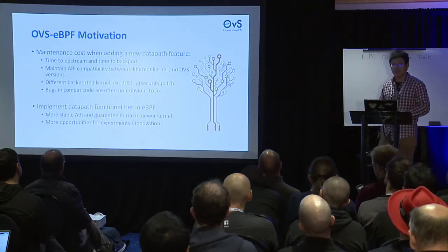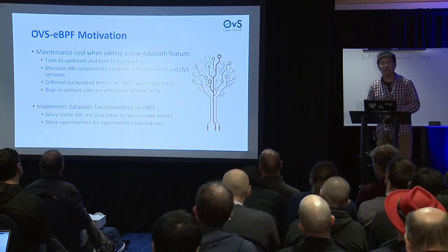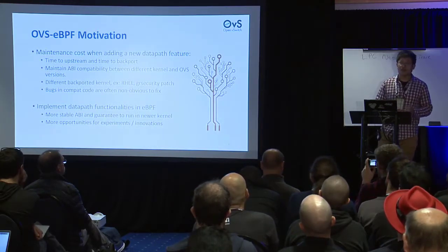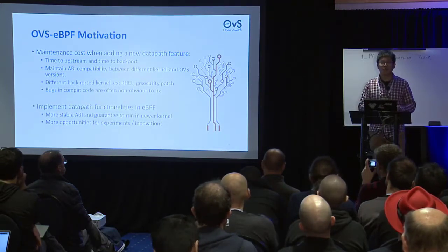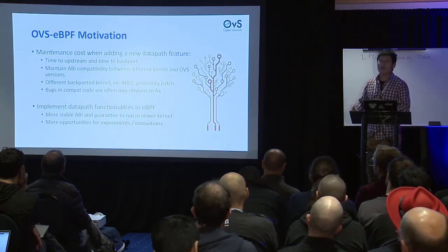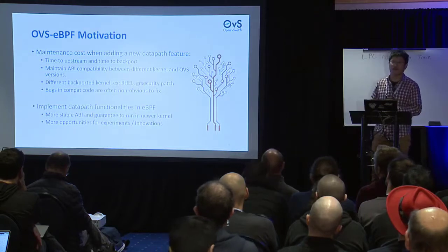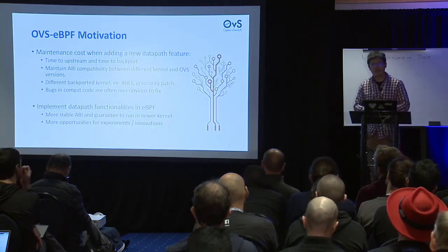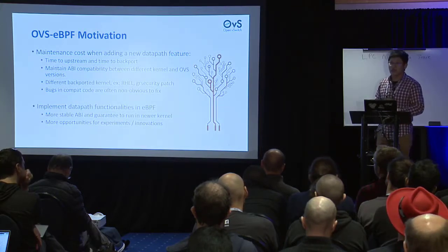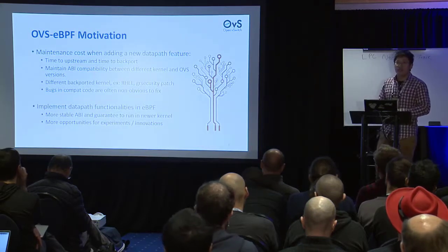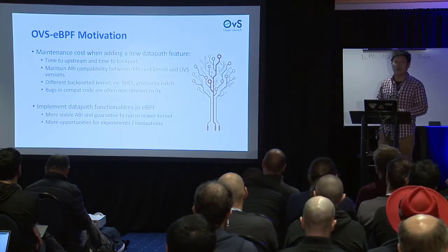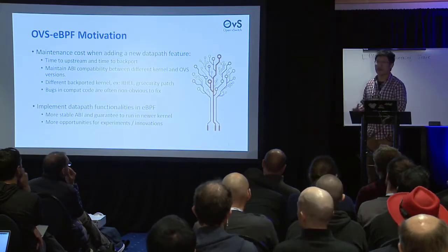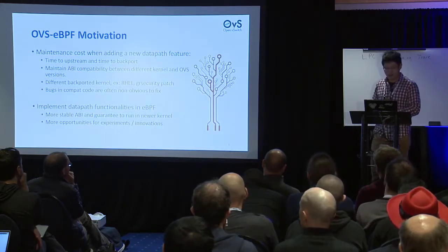The motivation for the first project is that for a long time, adding a new feature to the OVS kernel data path required implementing the feature, backporting to older kernels customers run, and ensuring it works on newer kernels. Customers also run non-standard kernels like Red Hat's backports or GRsecurity patches, requiring more code changes. The kernel module has ended up with deeply nested #ifdef/#else blocks, making it very hard to read and debug.